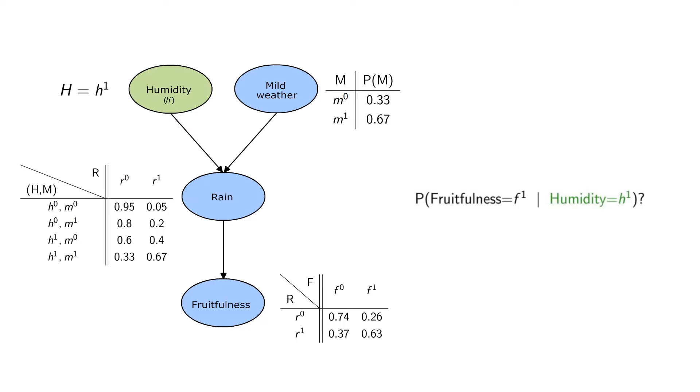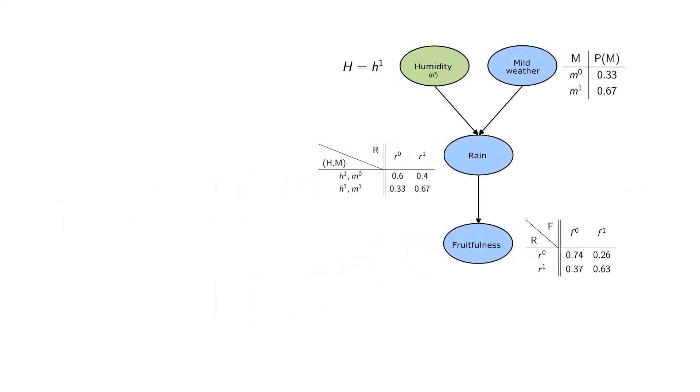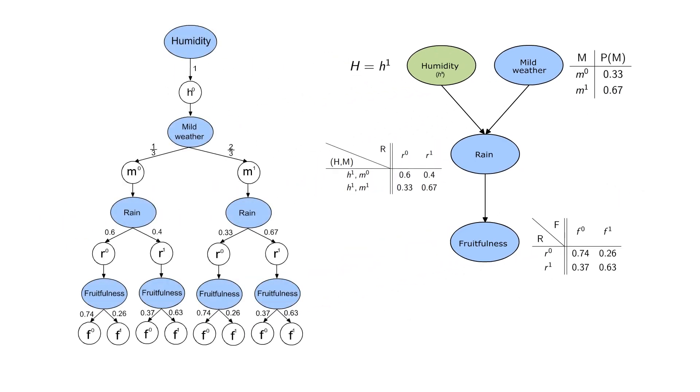We can use Gibbs sampling. The observation that it is humid reduces the other probability tables. We start with a sample drawn by forward sampling and define an order of the unobserved variables.